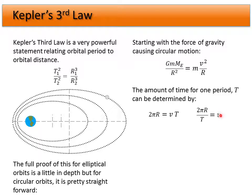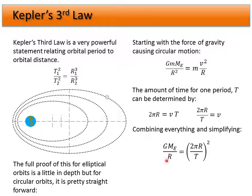Rearranging, the velocity equals the circumference divided by the period. Combining and simplifying everything, one radius and one mass cancel, giving us GM over r equals v squared. Substituting v equals 2πr over T into that expression and rearranging, we get r squared here and a radius term there, which combine into r cubed.